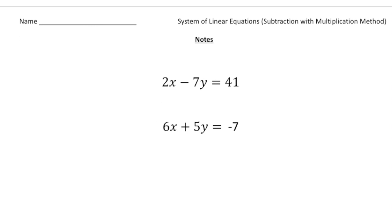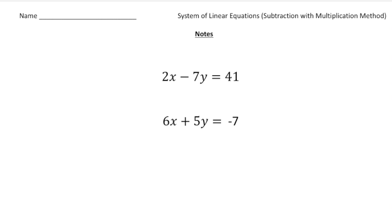Take a look at the next page. This problem involves using the subtraction method but also multiplication as well. We have 2x minus 7y equals 41, and 6x plus 5y equals negative 7. Notice we don't have like coefficients the way we did before with the four y's, so this is what you can do — you can multiply each term by a common factor.